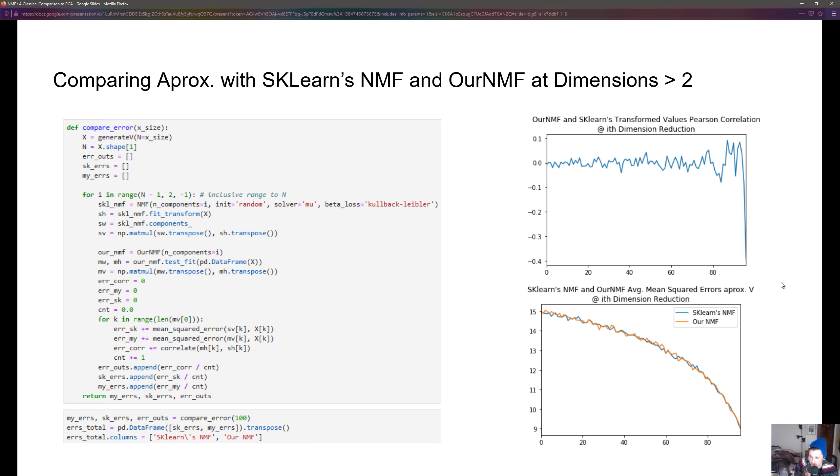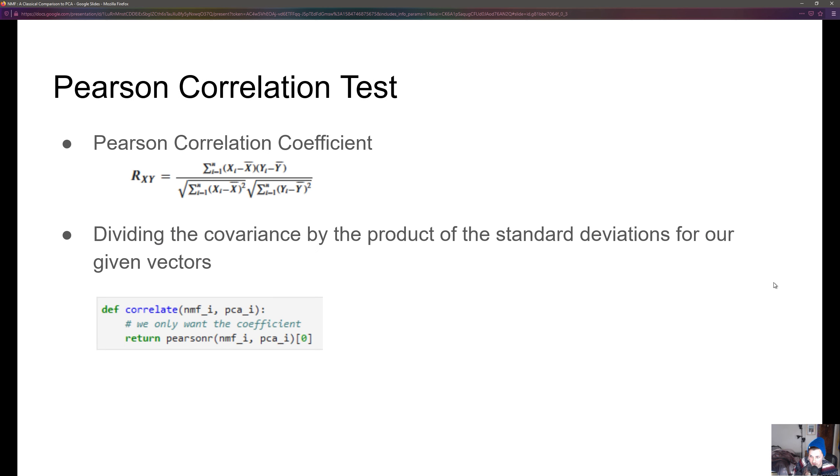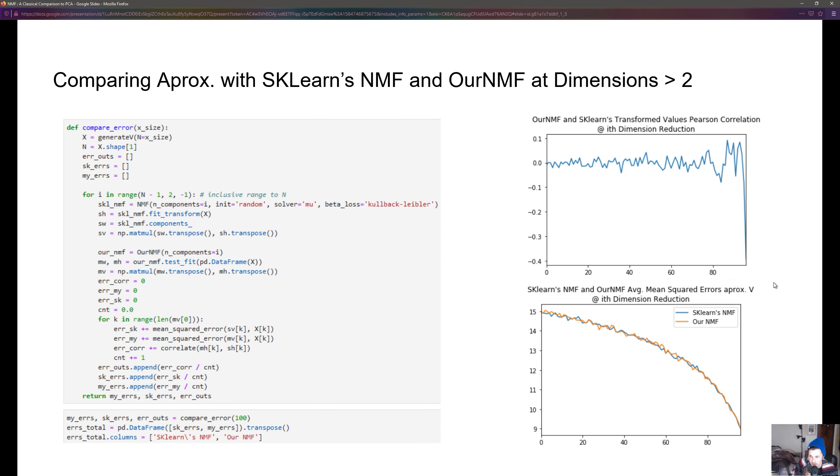So basically this is what we did. We compared scikit-learn's NMF to our NMF at approximating. We also compared the correlation values for the basis vectors for PCA.